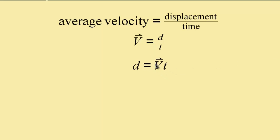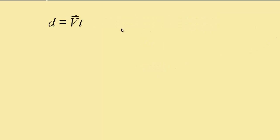If we look at this and rearrange it — if we multiply both sides by t — then displacement equals velocity times time. So displacement is velocity times time, which is what we just looked at.